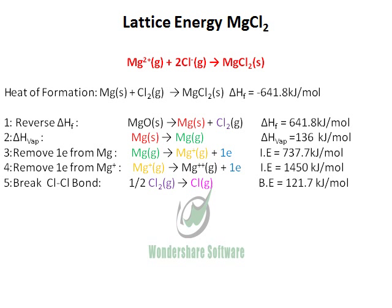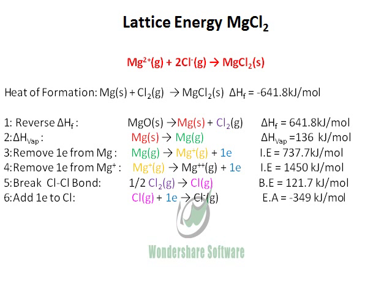If you look up the literature value, it will be twice that. So now that the Cl₂ bond is broken and we have Cl gas, we need to convert it into ionic form. Therefore, we add an electron to it to get Cl⁻, and then we have that equation as written.